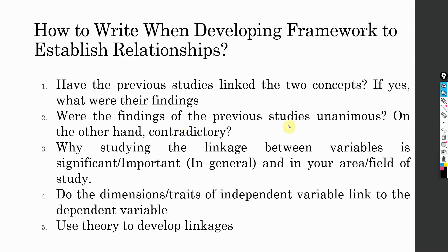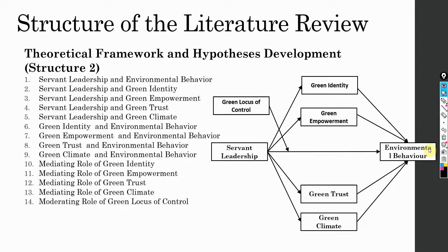Were the findings of the previous studies unanimous? If the previous research studies have linked the two concepts, were the findings unanimous? For example, you found three studies on the relationship between servant leadership and environmental behavior, and all three found a positive relationship — so the findings are unanimous. But you may find studies where one found a positive relationship, another found a positive as well, while the third did not find any relationship. These are contradictory findings.